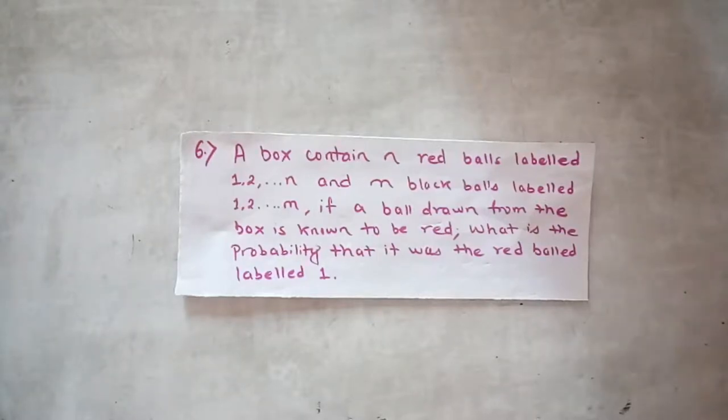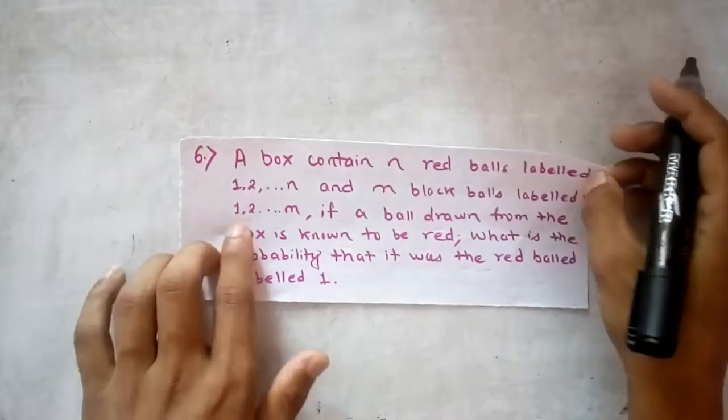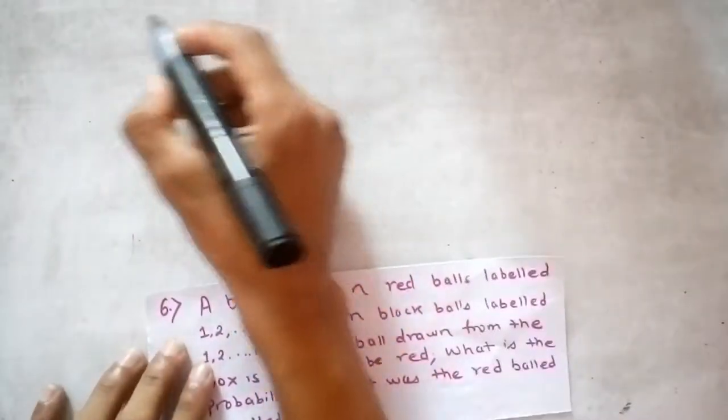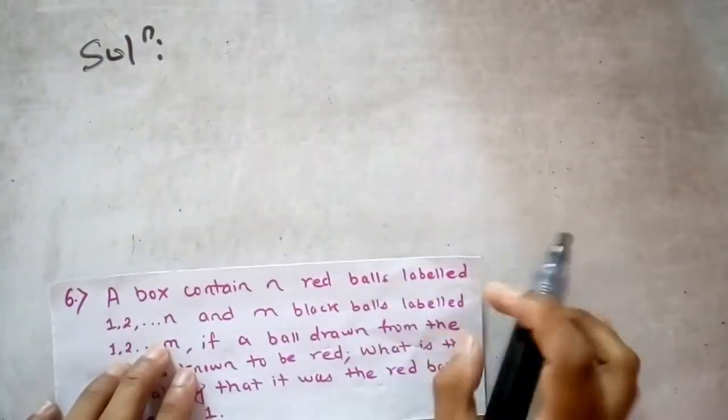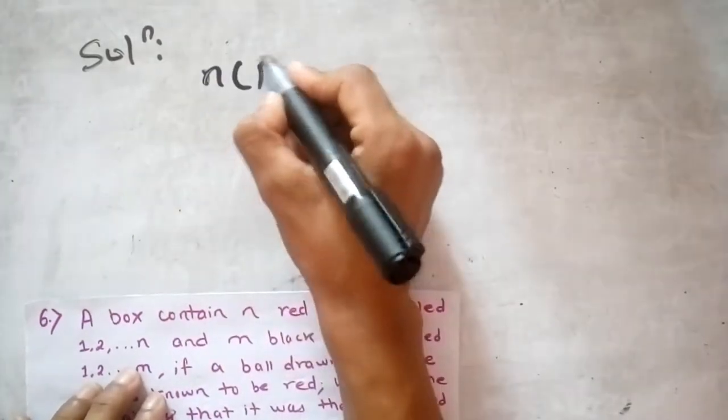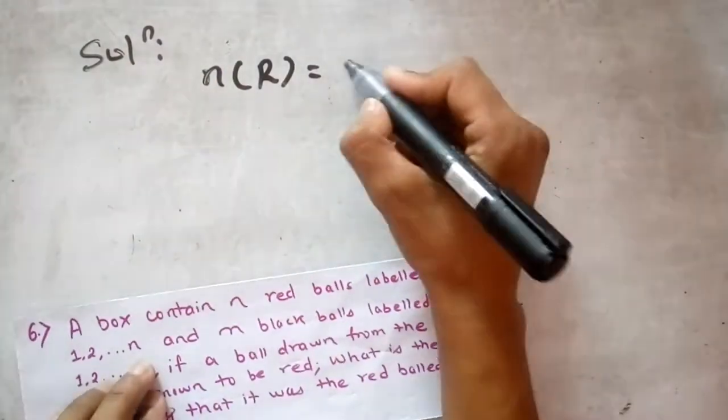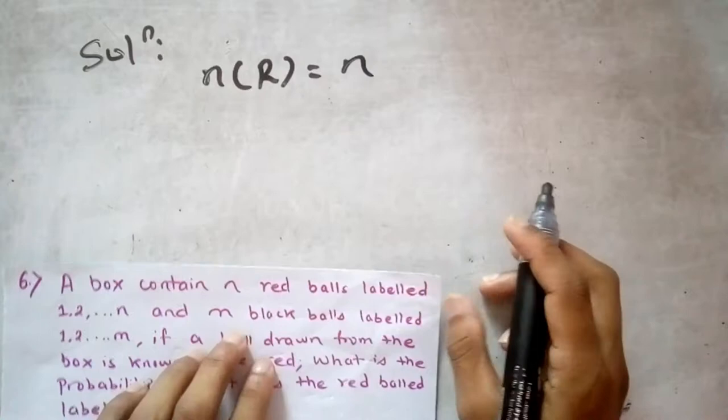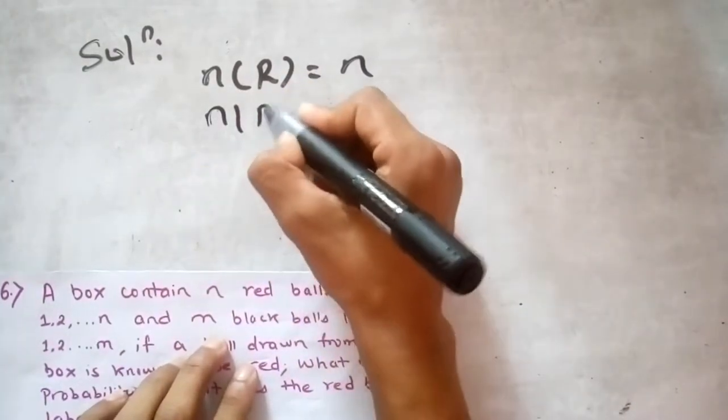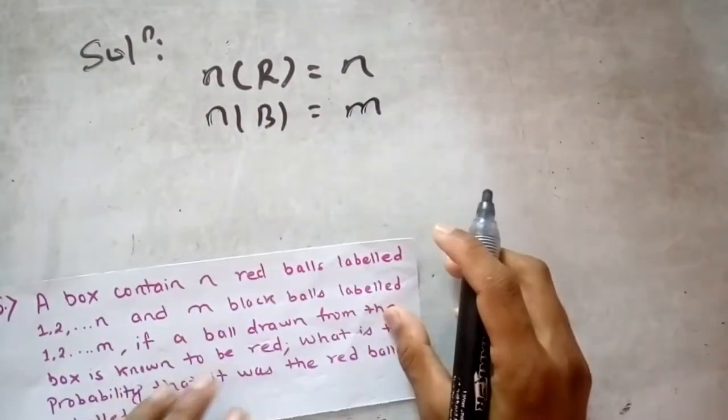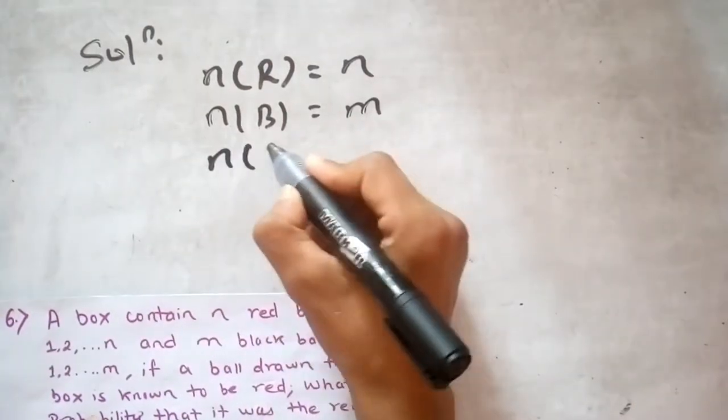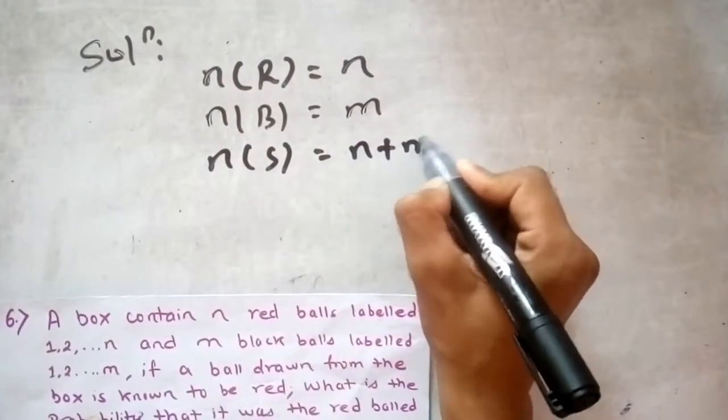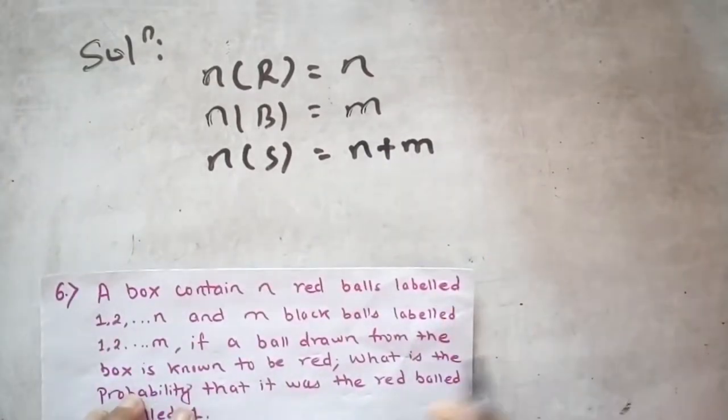Okay, this is question number 6. A box contains n red balls labeled 1, 2, ... n and m black balls labeled 1, 2, ... m. If a ball drawn from the box is known to be red, what is the probability that it was red ball labeled 1?